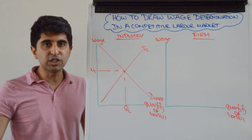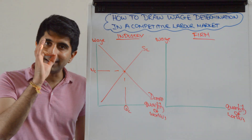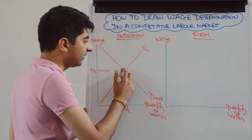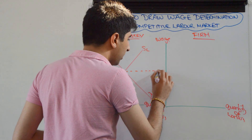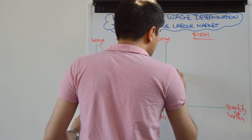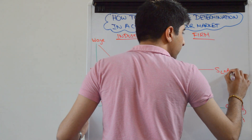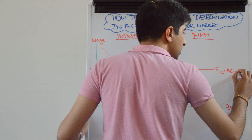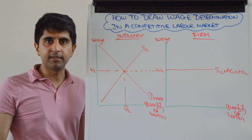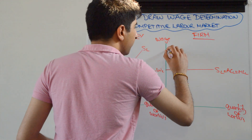Now we look at a firm who has to take that wage. The firm is a wage taker, so they take the wage WC and operate with it. There's WC. That wage now becomes the firm's supply of labour curve, which is their average cost of labour, which is their marginal cost of labour in perfectly competitive labour markets.